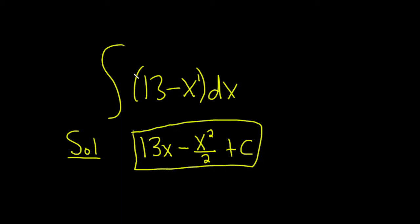So again, just a quick recap: whenever you have a number, you just put an x next to it. If you have x to the first power, you just add 1, so 1 plus 1 is 2, and then you divide by 2.